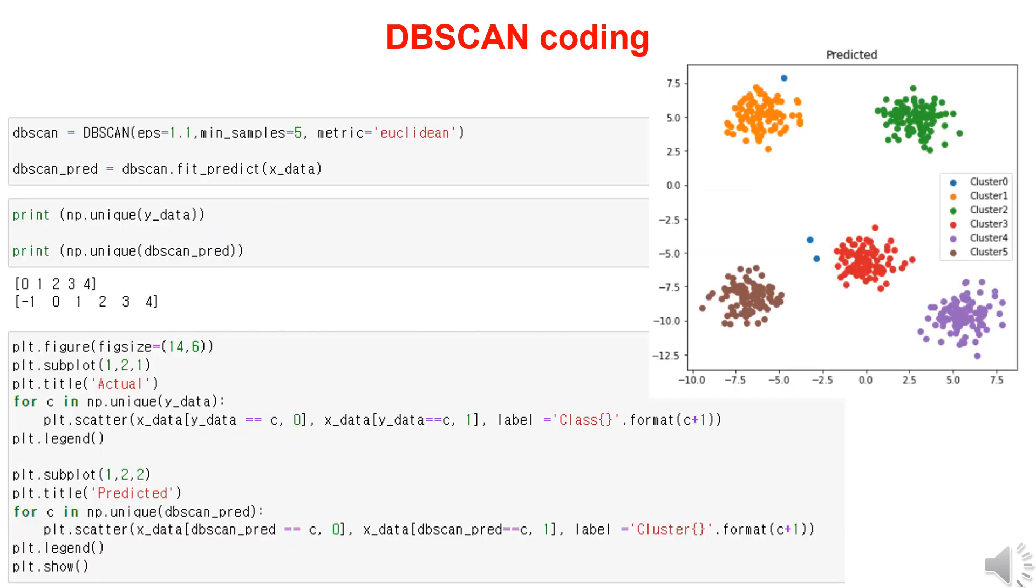For DBSCAN cluster analysis, let's set epsilon to 1 and the minimum points to 5 using Euclidean distance for measurements. Unlike the k-means clustering method, we don't predefine the number of clusters and proceed with the cluster analysis using the X data. After running the cluster analysis...